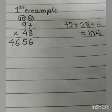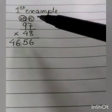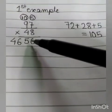In this example, first we have to multiply these two numbers, that is 56, and 5 is carried on. Then we have to multiply these two numbers, that is 72.